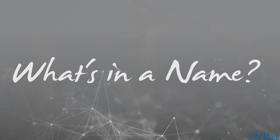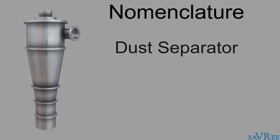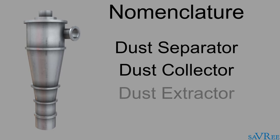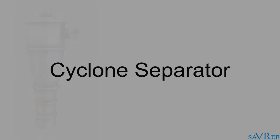The first thing to realize is that a cyclone separator has several colloquial names. These names include dust separator, dust collector, dust extractor, and cyclone extractor. Generally, smaller units are referred to as dust separators or extractors, whilst large-scale industrial separators are referred to as cyclone separators. For this reason, we'll be using the term cyclone separator throughout this video.